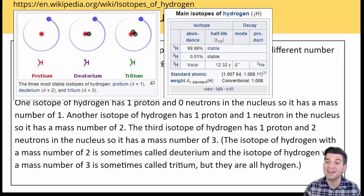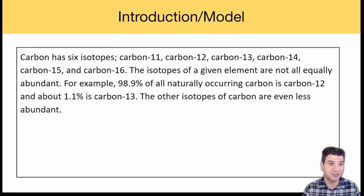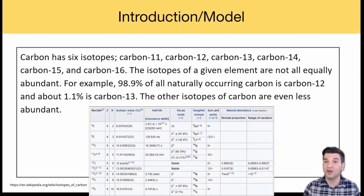Another isotope of hydrogen has one proton and one neutron in the nucleus, so it has a mass number of two. A third isotope of hydrogen has one proton and two neutrons in the nucleus, so it has a mass number of three. The isotope of hydrogen with a mass number of two is sometimes called deuterium, and the isotope of hydrogen with a mass number of three is sometimes called tritium. But remember, they're all hydrogen.